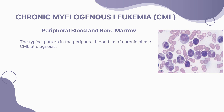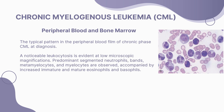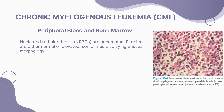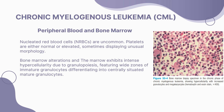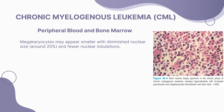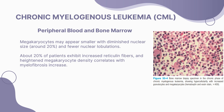In the peripheral blood film of chronic phase CML, leukocytosis is evident, dominated by segmented neutrophils, bands, metamyelocytes, and myelocytes. Immature and mature eosinophils and basophils are increased. Myeloblasts and promyelocytes account for around 1% and 5% respectively. Inside the bone marrow, intense hypercellularity due to granulopoiesis is observed, with zones of differentiation into mature granulocytes. Megakaryocytes are usually normal or increased, sometimes clustering with dyspoietic changes, and around 20% of patients exhibit increased reticulin fibers.